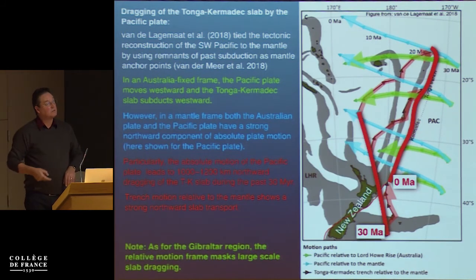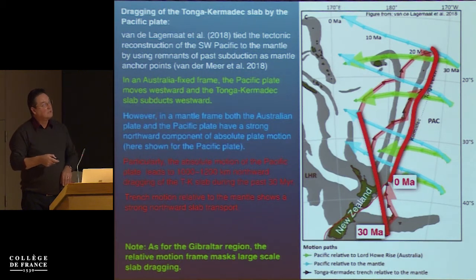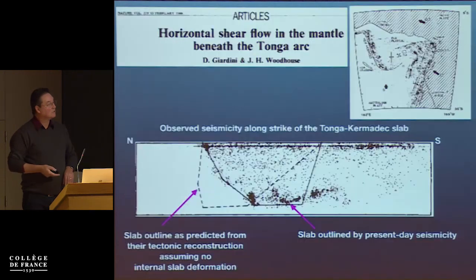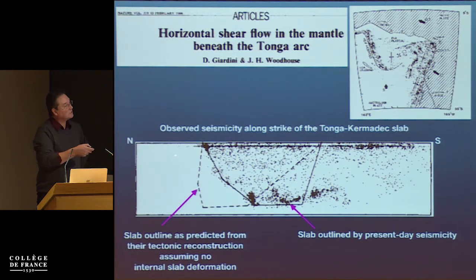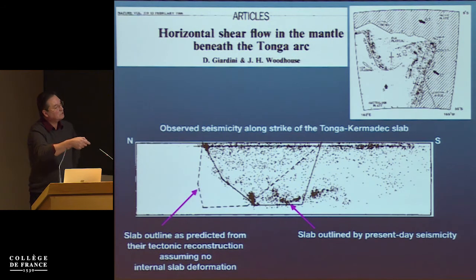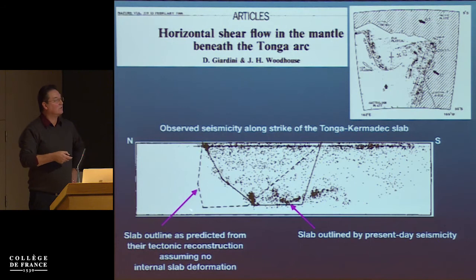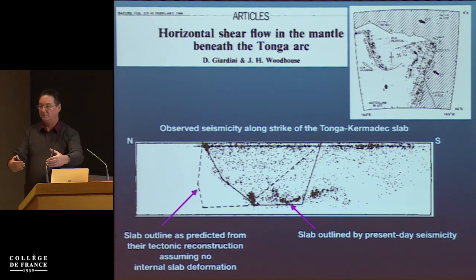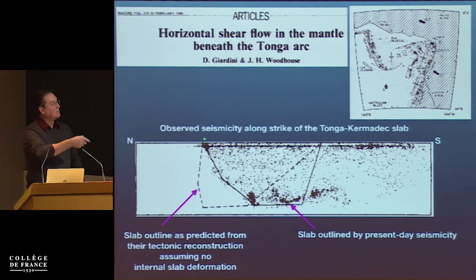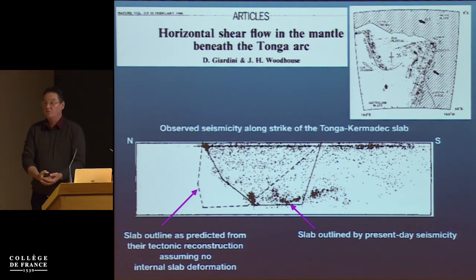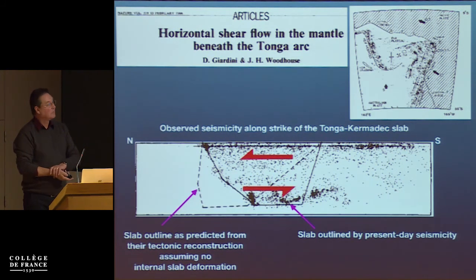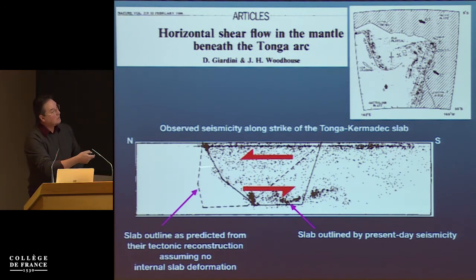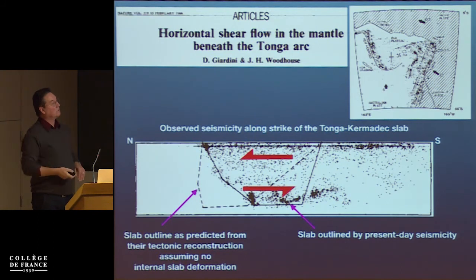As in the Gibraltar region, this was largely overlooked — except by Giardini and Woodhouse in a 1986 Nature paper. They showed the long-strike Tonga-Kermadec seismicity, and did a tectonic reconstruction predicting where the slab would be if undeformed — the dashed line. But the actual outline of seismicity, confirmed later by tomography, shows huge slab deformation. I show this as a general shear, but there's also significant compressive indentation of the mantle at the slab edge, giving an overall compressive state of stress there.